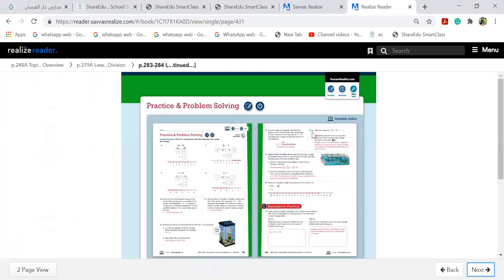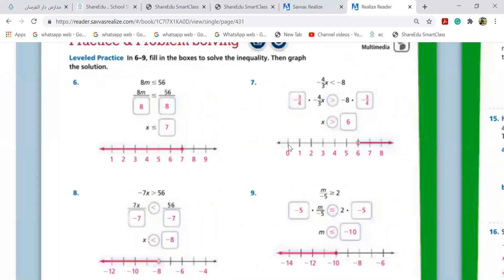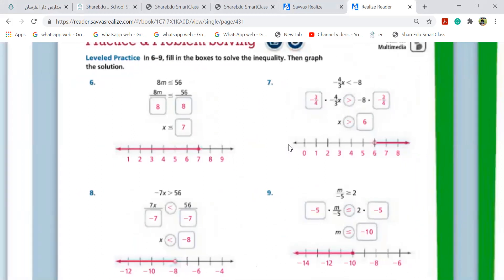5.5, what we are doing today, take workbook as homework. Let me know which questions you are not able to do. Question number six. 8m less than or equal 56. So m is less than or equal to 56 over 8. That is, m is less than or equal to 7. This is my answer.